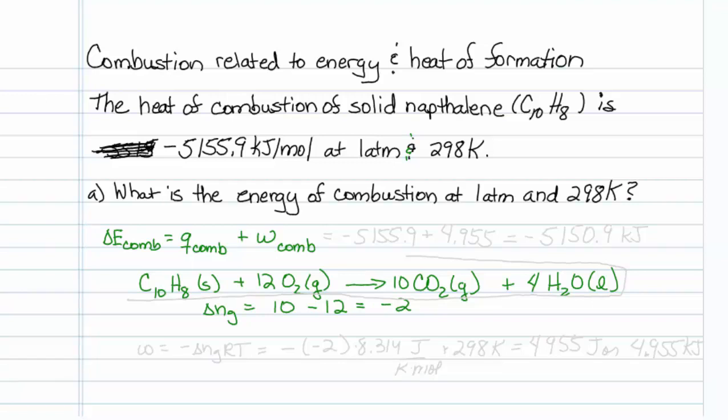Now we can determine the work. The work for our one mole of material is going to be equal to minus delta n_g RT. So that will be minus a minus 2 times 8.314 joules per Kelvin mole times 298 Kelvin. Putting that into our calculator gives us a positive 4,955 joules or 4.955 kilojoules of work.